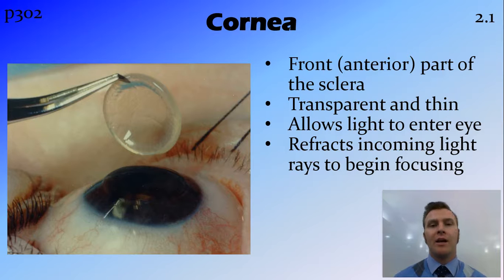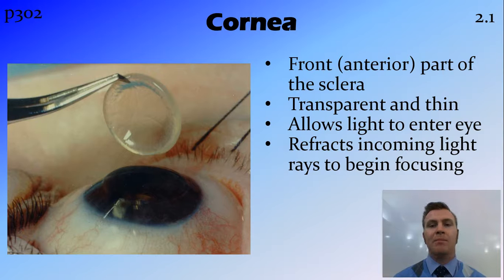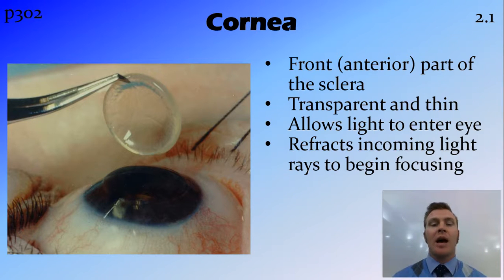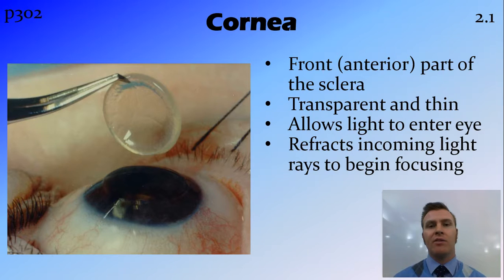The cornea is the clear part of the sclera at the front — the anterior part — of the eye. It's transparent, so it allows light to enter the eye, and is the first refracting surface that light hits as it begins the process of being focused onto the retina.